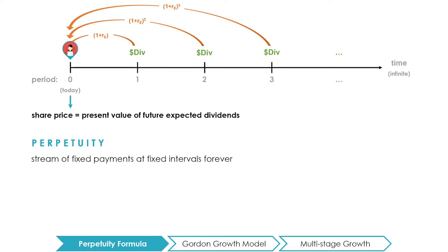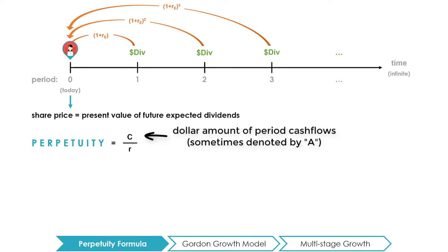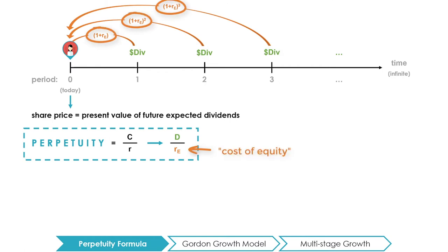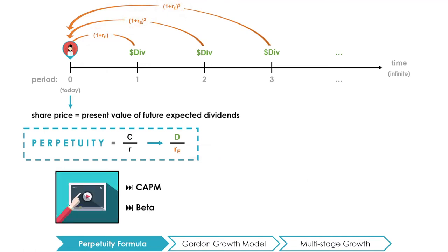Recall that the present value of a perpetuity can be calculated using the following formula: C divided by R. C is the dollar amount of the periodic cash flows, which in the case of stocks are the dividends, so you will often see this formula use the letter D instead of C to represent dividends. The discount rate for the dividends is RE, the cost of equity, which represents the appropriate discount rate that takes into consideration the riskiness of the firm's equity relative to the entire stock market. If you are curious about how RE is calculated, please refer to the videos on CAPM and Beta.